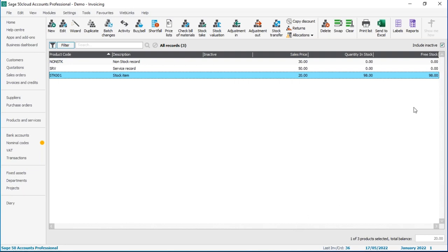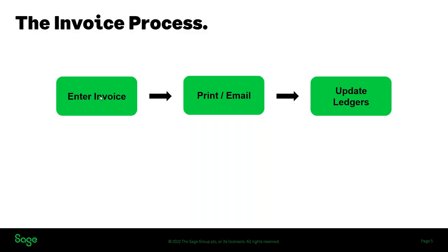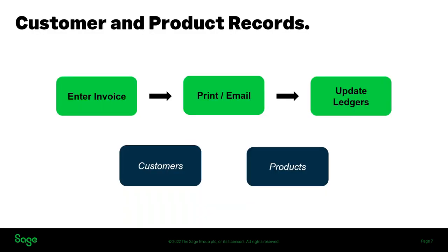So those are the three key steps: entering the invoice, printing or emailing it, and updating it to the ledgers. The update ledgers step is what commits it to your accounts and impacts both the customer record and the product record. If the invoice has already been posted and you try to amend it, those changes won't be reflected in the customer's account. If you need advice on what to do at that point, get in touch with our support team or check the help centre.